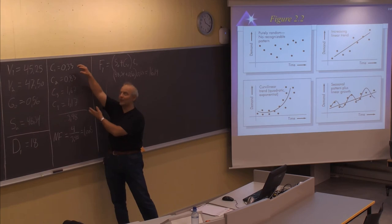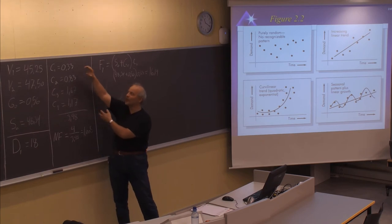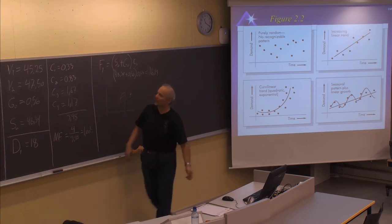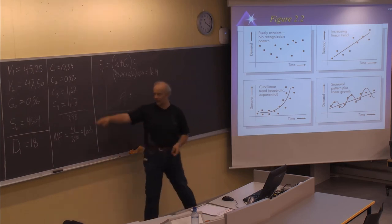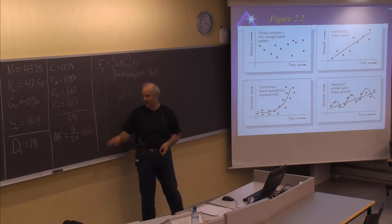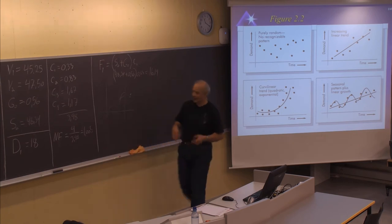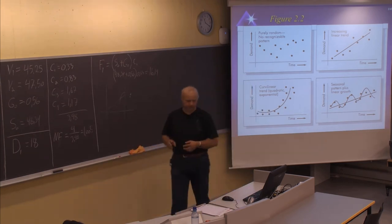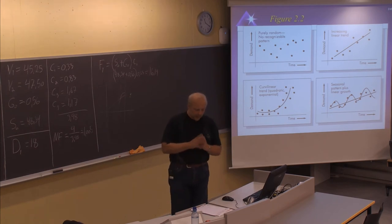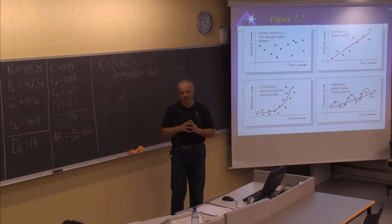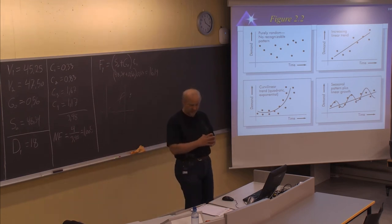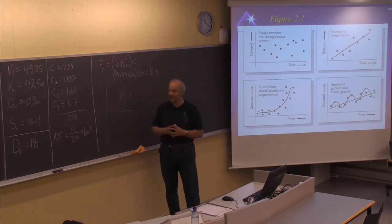Ideally, every time you make a new update of a seasonal factor, you should also update the others to get them normalized to be exactly equal to 4 when you sum them together. We remember the formulas which were presented last lesson, and we now first start with updating the series.